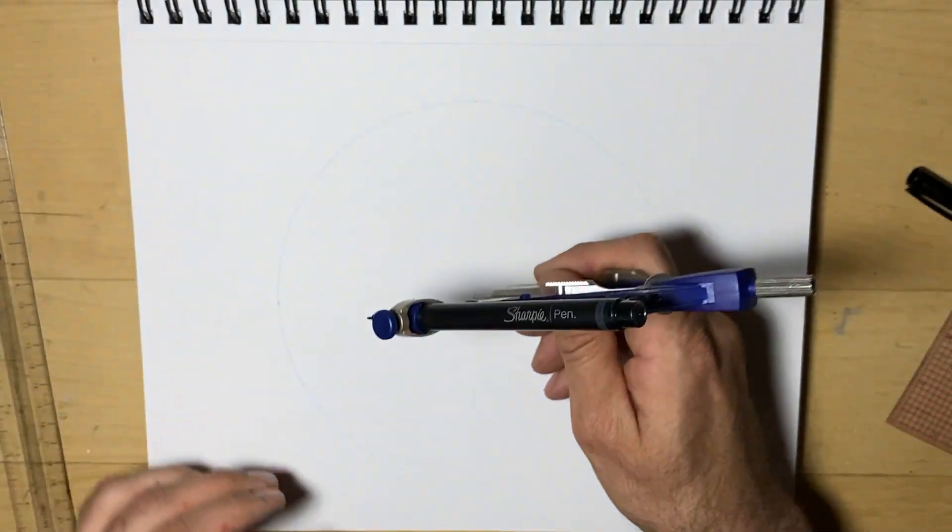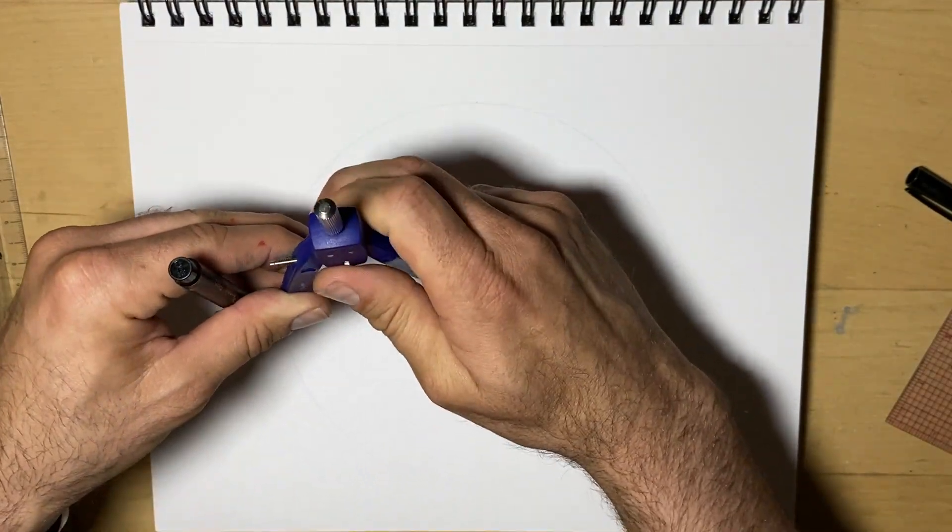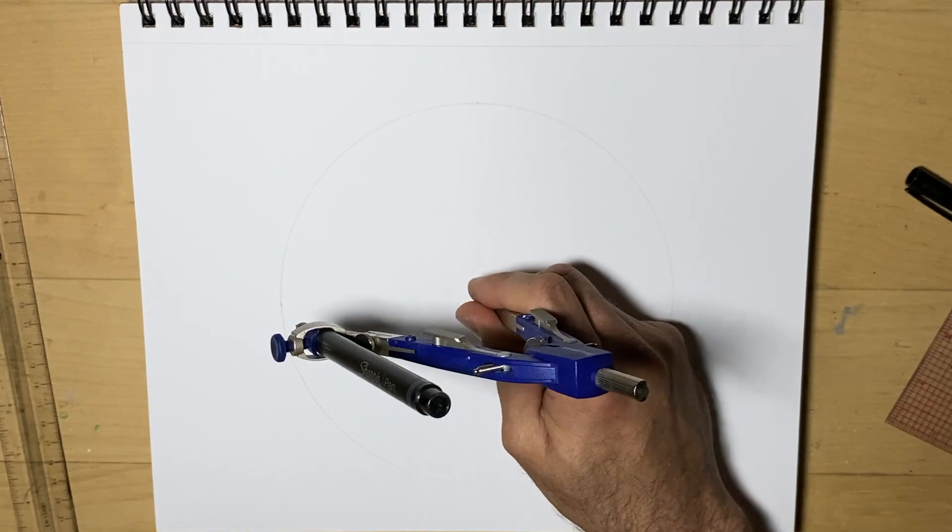Hi everyone, I want to show you how to find or make the Deathly Hallows symbol from Harry Potter. The three symbols that represent the tools the brothers used to escape death.